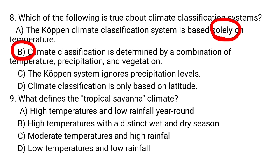Tropical savanna climate is characterized by high temperatures with a distinct wet and dry season — B is the correct answer. Tropical savanna is not dry year round, so A is incorrect. C is wrong because tropical savanna does not have consistent rainfall. D is wrong because temperature in tropical savanna is not low.